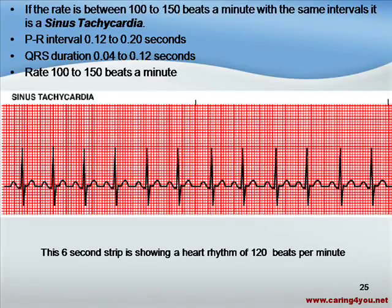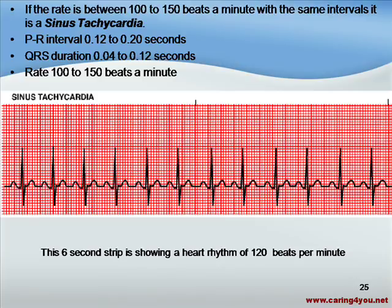Let's look at an EKG strip of sinus tachycardia. The PR interval fits the criteria. The QRS duration fits the criteria. The only difference is the rate. In this particular strip, we count the rate by counting the R waves: 1, 2, 3, 4, 5, 6, 7, 8, 9, 10, 11, 12. We take 12, multiply that by 10, and in this particular EKG strip we have a heartbeat of 120 beats per minute.